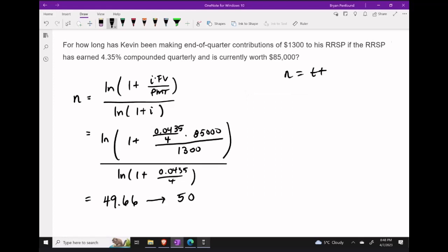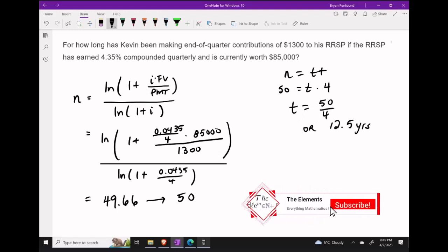If we want to find the term or the number of years that Kevin's been making these contributions, let's apply the formula that n is equal to t times F. We know n is equal to 50, t is what we're going to solve for, and we know our frequency number here is 4. So this implies that t should be equal to 50 over 4. And dividing here we see that the term is 12.5 years.